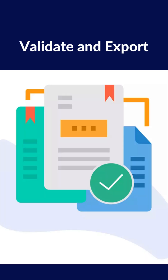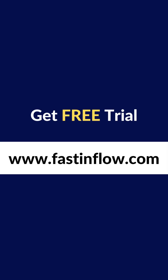Your data will be transferred to the ledger sheet if it contains any new ledgers. Go to the ledger sheet and click the Export to Tally button to create new ledgers. After successful validation, select Export to Tally from the menu.